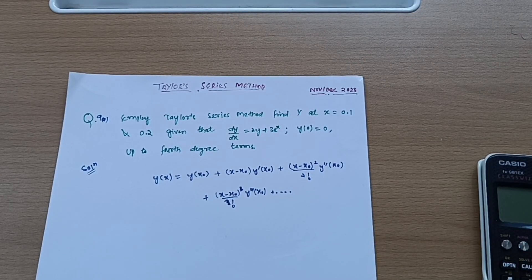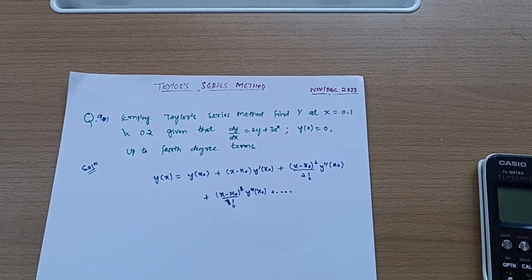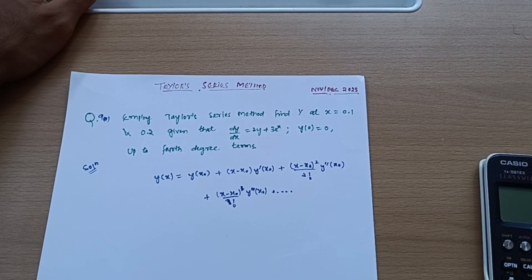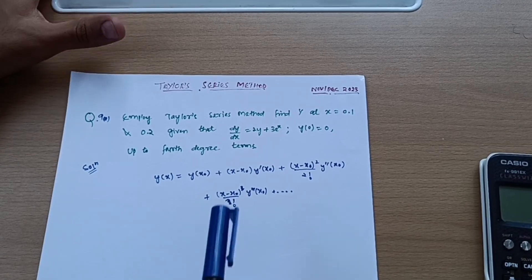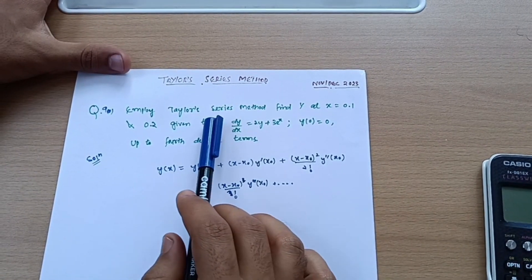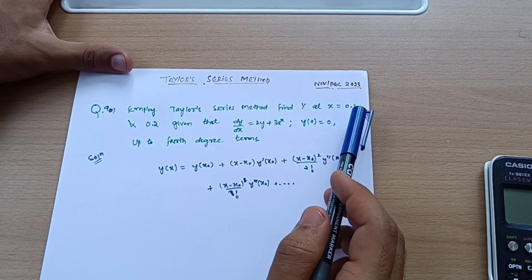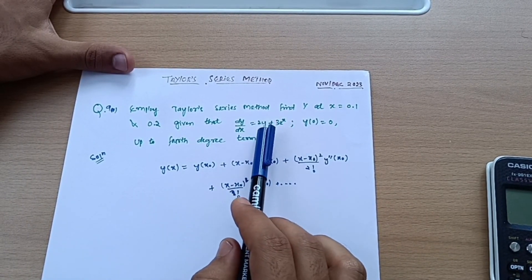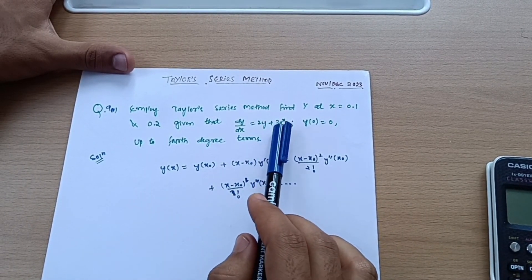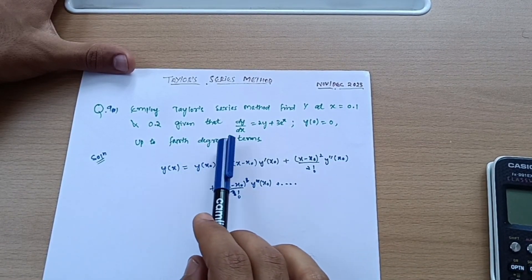Hello dear students, hope you are all doing well. In this video I will be discussing the Taylor series method. I have taken the question from the November-December 2023 question paper. The problem: employ Taylor's series method to find y at x = 0.1 and 0.2, given that dy/dx = 2y + 3eˣ, y(0) = 0, up to fourth degree terms.